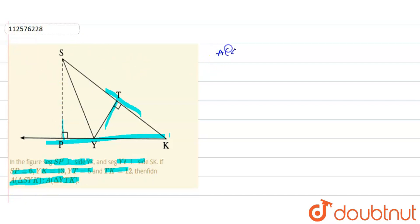What do we find? The area of triangle SYK upon area of triangle YTK value.